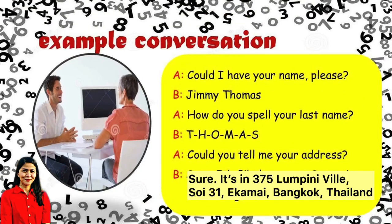Could you tell me your address, please? Jimmy Thomas. How do you spell your last name? T-H-O-M-A-S. Could you tell me your address? Sure, it's at 375 Lumpini Ville, Soy 31, Ekamai, Bangkok, Thailand.